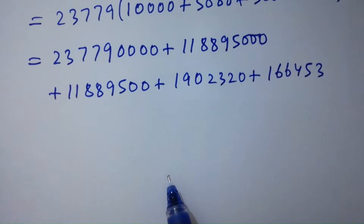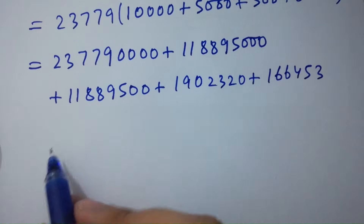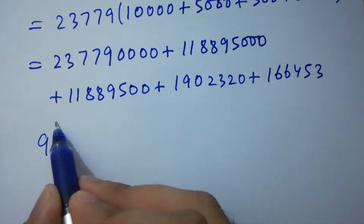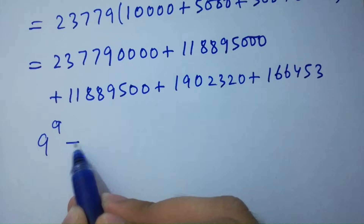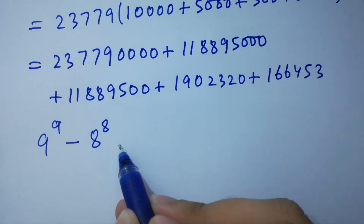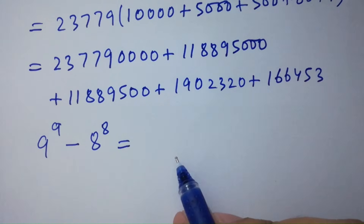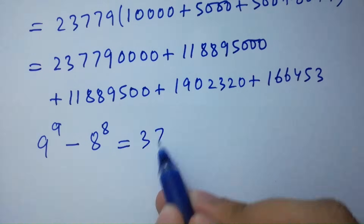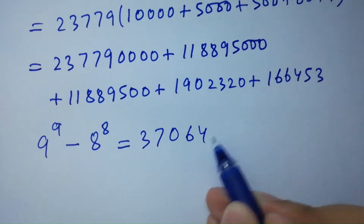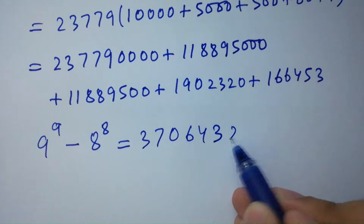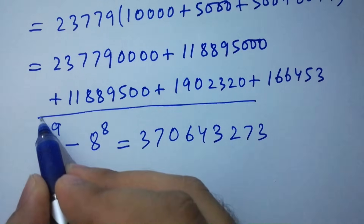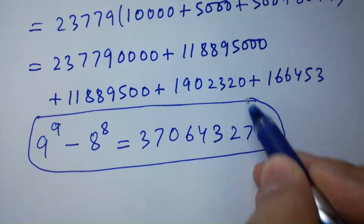So in the last step, by adding them, we have 9 to the power 9 minus 8 to the power 8 equals 370,643,273. That's our final answer.